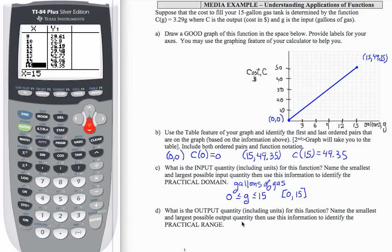The output quantity is cost in dollars. We kind of have already looked at that. The smallest and largest output quantities, well, the output ranges from zero all the way up to $49.35. That's my maximum when my input is 15. So if I want to use interval notation there, it's [0, 49.35]. And this is my practical range limited by the size of my gas tank. Practical domain also limited by the size of my tank.